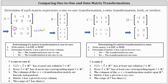Looking at the reduced row echelon form of matrix B, there is a pivot in row one, column one, and row two, column two. We do have a pivot in every column, but we do not have a pivot in every row. Because we have a pivot in every column, this is a one-to-one transformation, but not an onto transformation.